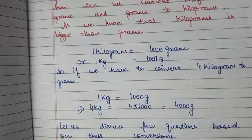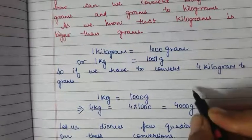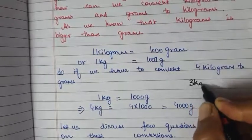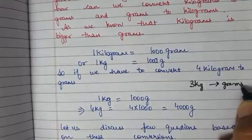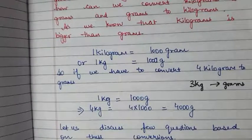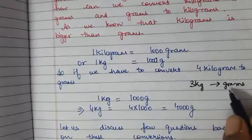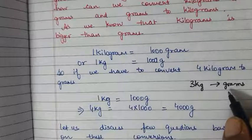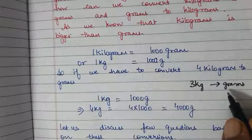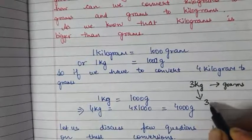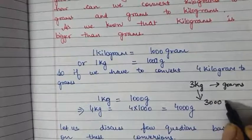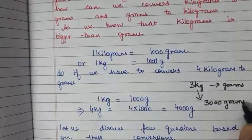Clear? Similarly, if you have to convert 3 kg into grams, you can tell it verbally. 3 kg to grams — again, 1 kg is equal to 1000 grams. So 3 kg will be equal to 3000 grams. Clear?